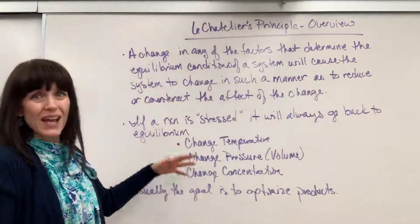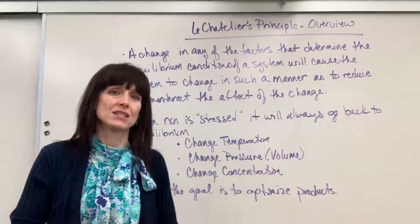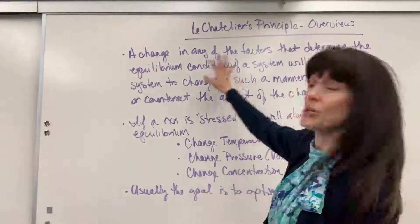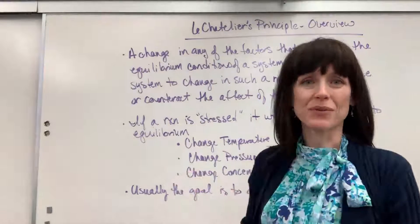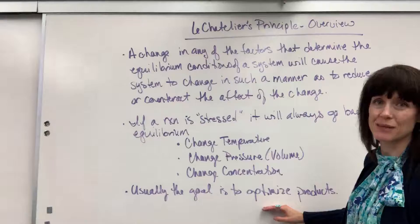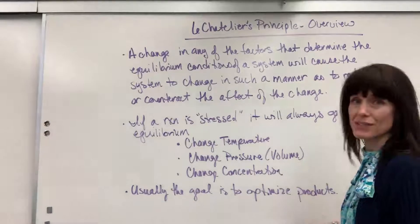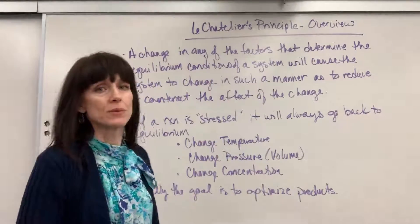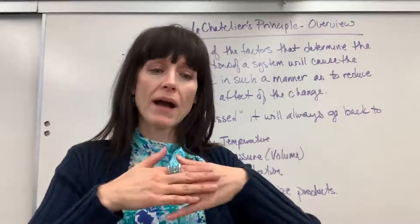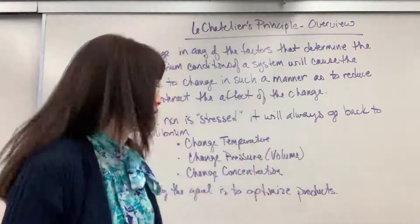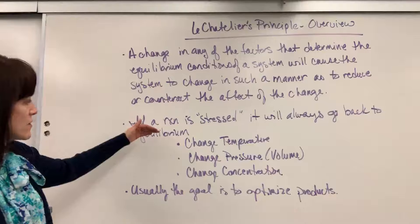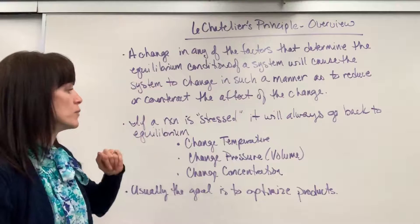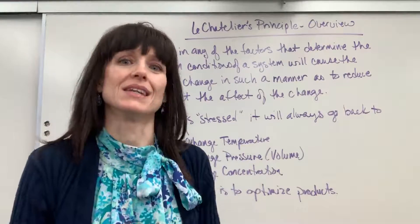You change any of those and the reaction will shift and go back into equilibrium. We'll use this principle to tweak reactions to try and maximize and optimize the amount of products. Typically, in real life situations, if you have more products, you make more money. So we will exploit this principle — tweak something and shift a system back into equilibrium — so that it's going to make more products.